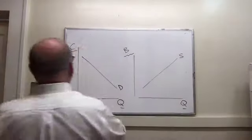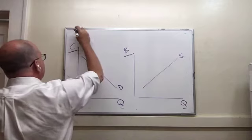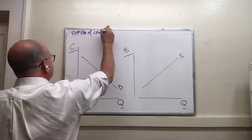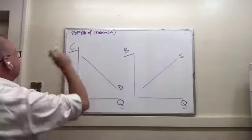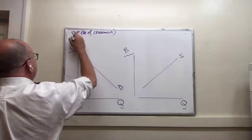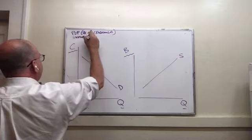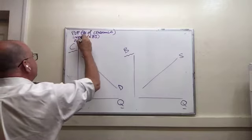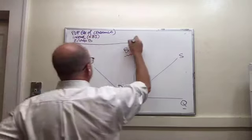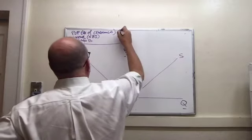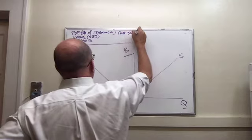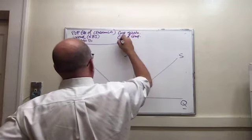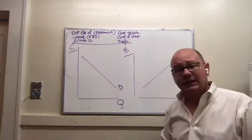Go down those lists. Put that list up. We have number of consumers or population. What else do we have? We have income, normal and inferior. We have expectations and information about the benefit. We have cost of substitutes, cost of complements.